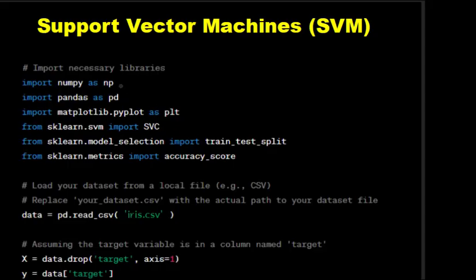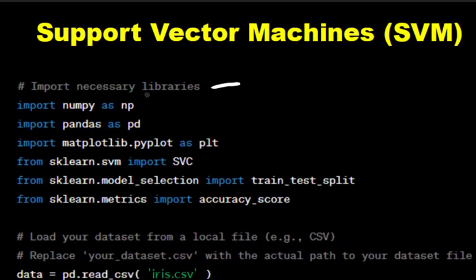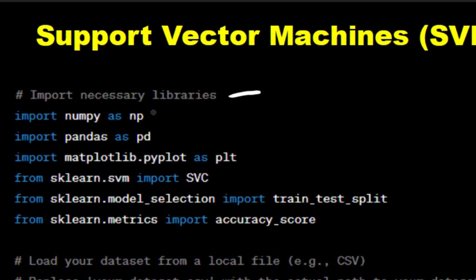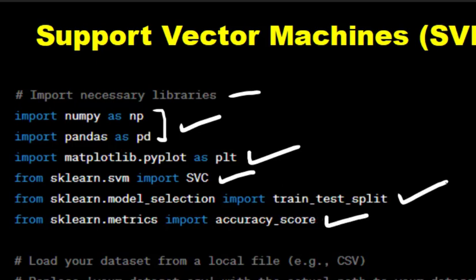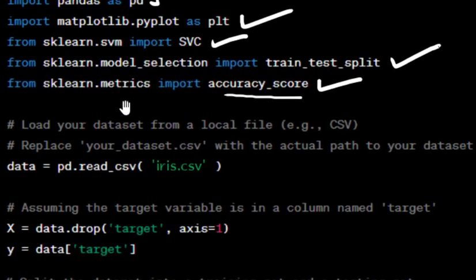Here we explain the Python code for implementing SVM classifier. We start by importing the required Python libraries: NumPy and Pandas for data handling, Matplotlib.pyplot for visualization, SVC support vector classifier from scikit-learn for SVM implementation, train_test_split for splitting the dataset into training and testing sets, and accuracy_score for evaluating the model's accuracy.